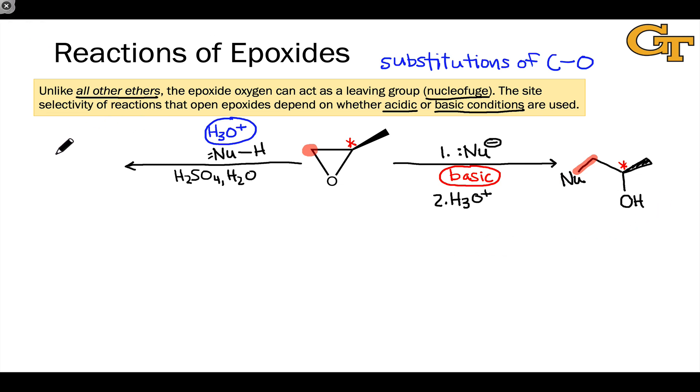Under acidic conditions, as you might imagine, otherwise we wouldn't have much to explain, the opposite site selectivity is observed. The left-hand carbon-oxygen bond does not break, and in fact substitution happens selectively at the right-hand carbon, the more substituted carbon. Under acidic conditions, the nucleophile ends up bound to the more substituted carbon of the epoxide. This carbon, the more substituted carbon, reacts selectively under acidic conditions. So we've got an interesting observation that the selectivity of nucleophilic substitution of epoxides depends on the conditions used and the strength of the nucleophile.